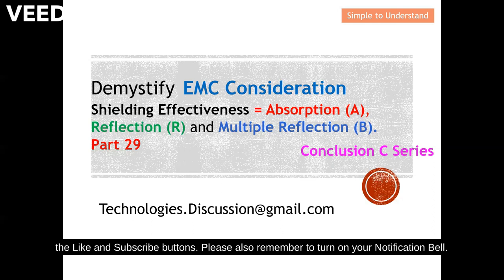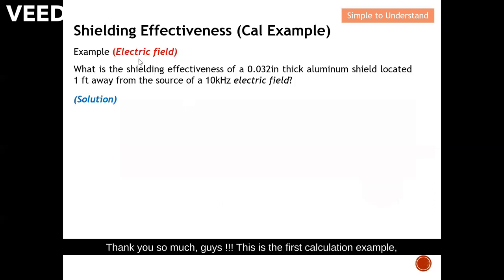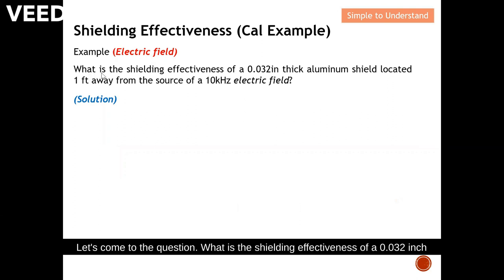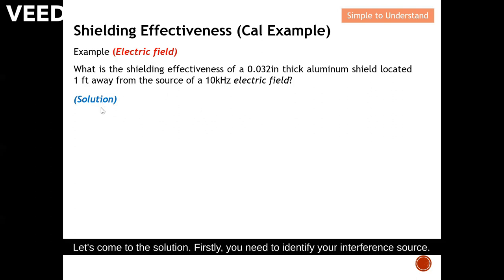This is the first calculation example — when your source of interference is an electric field. The question is: what is the shielding effectiveness of a 0.032 inch thick aluminium shield located one foot away from the source of a 10 kilohertz electric field?